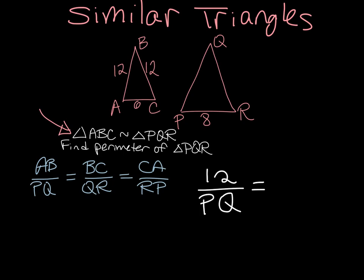BC is 12, but I also don't know QR, so let me skip the middle one and let me just use these two ratios. So 12 over PQ is equal to 6 over 8.